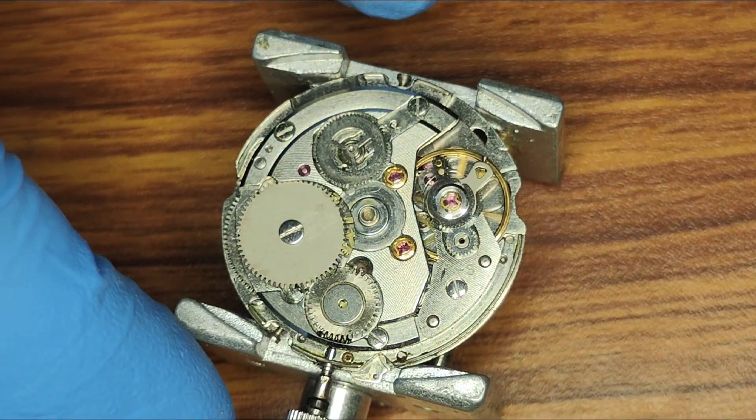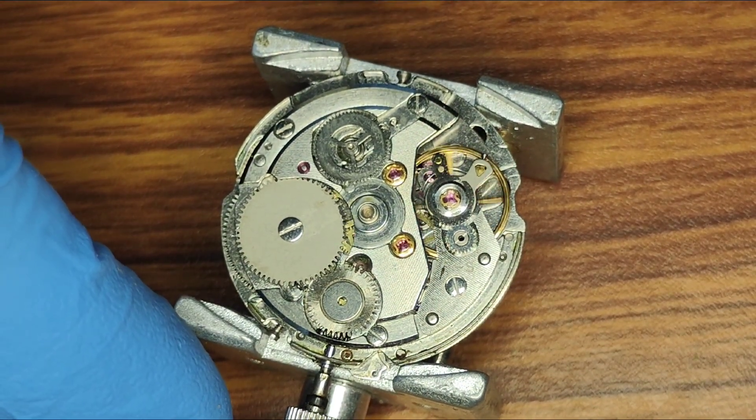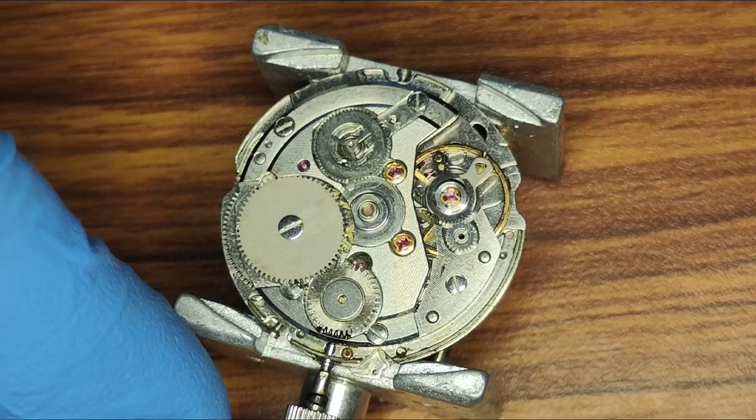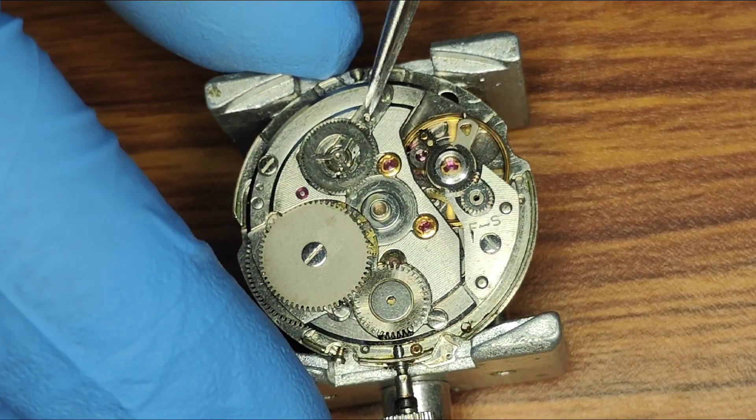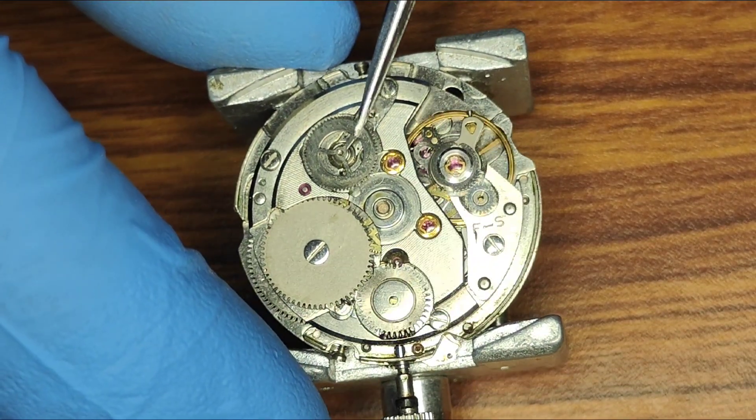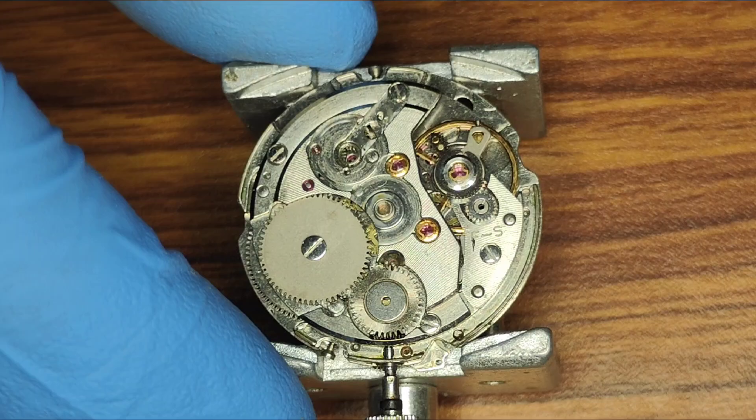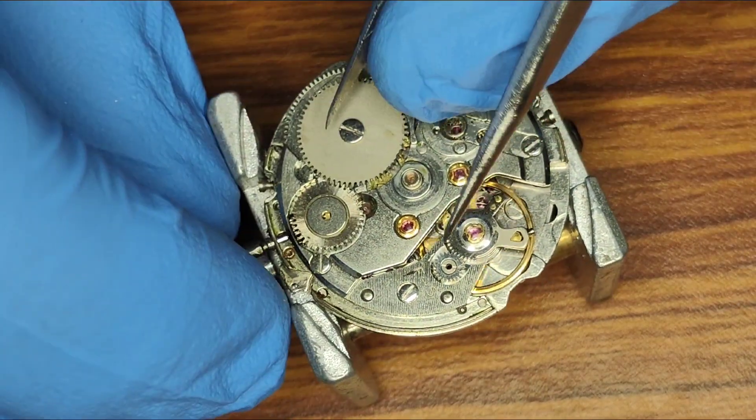After removing it, we can remove the first reverser idler. And only after removing this wheel, we can release the stored energy from the mainspring.